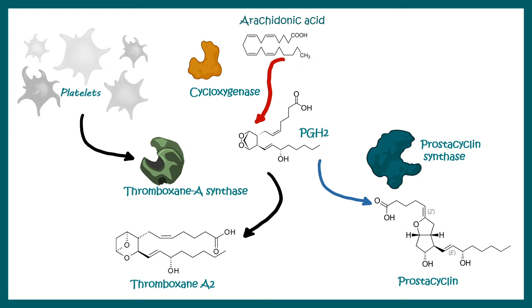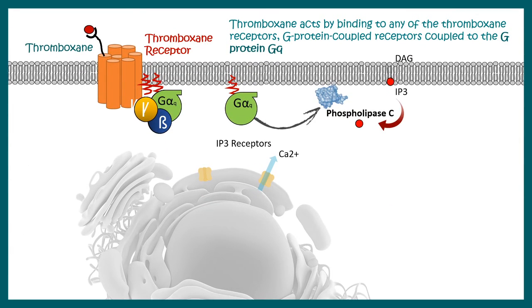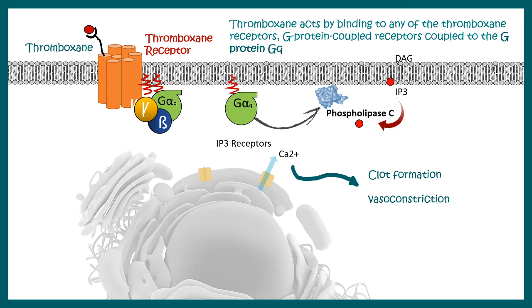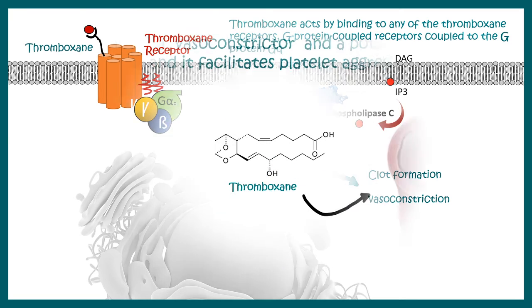Thromboxane A synthase enzyme is exclusively present in the platelet membrane, so the platelet is the site for thromboxane production. Thromboxane, once generated, can bind to thromboxane receptors present in a wide variety of cells, for example blood vessels. Thromboxane ultimately leads to G-protein mediated signaling, which elevates calcium levels in the cytoplasm.